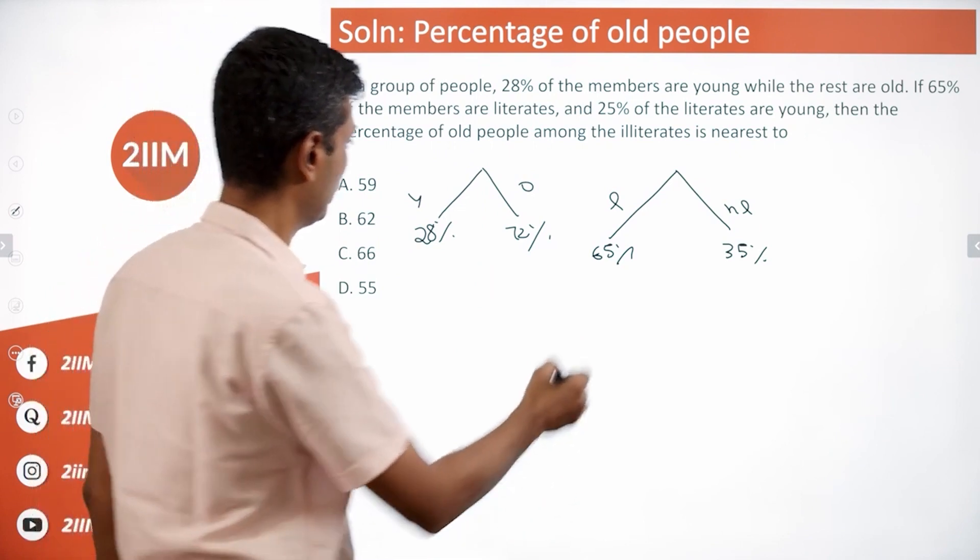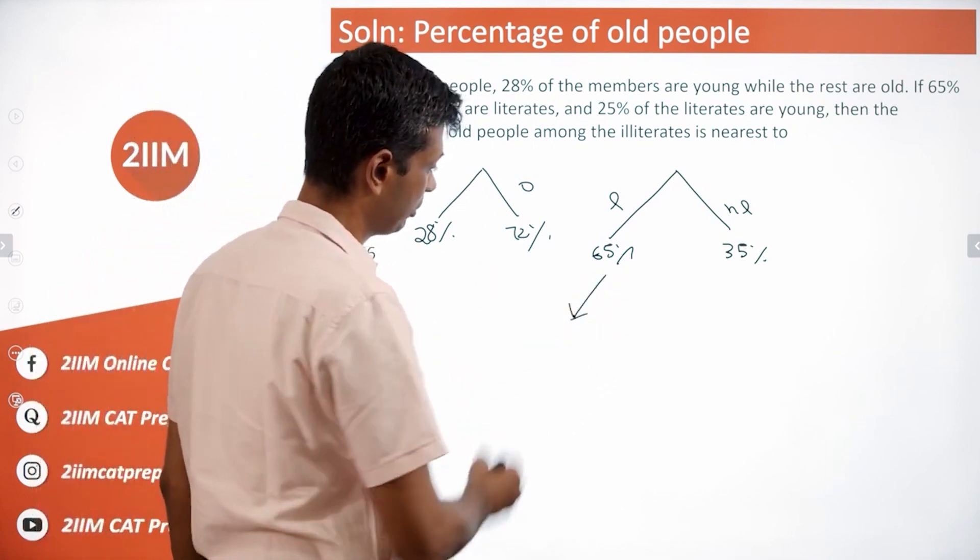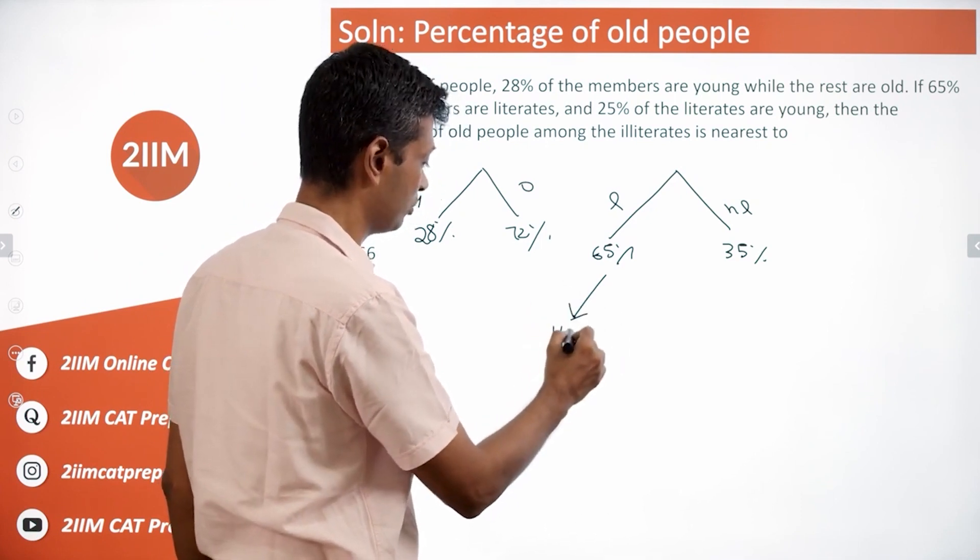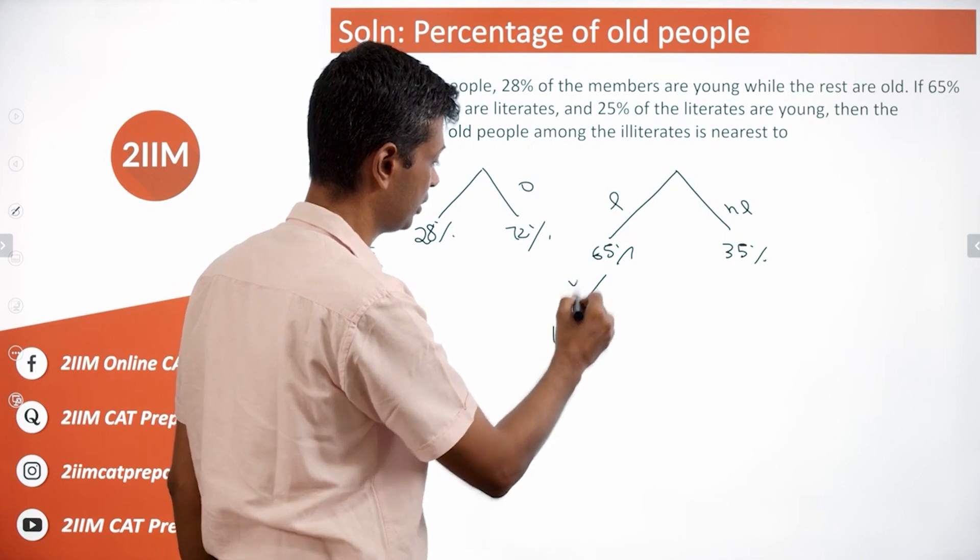So 25 percent of these are young. 25 percent of 65 - half of 65 is 32.5, half of that is 16.25 percent are young.